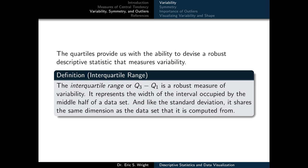We've now seen several formulas for different measures of variability. These measures are more complicated than the formula for a mean or median. For this reason, we're going to delay illustrating these measures — and future measures of symmetry and the importance of outliers — until we get into the technological companion for this video lesson. It is just more practical to compute these measures of variability, symmetry, and the importance of outliers with the aid of technology such as a calculator or mathematical software like MATLAB.